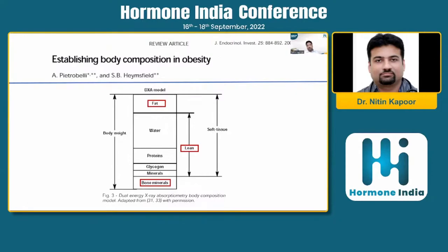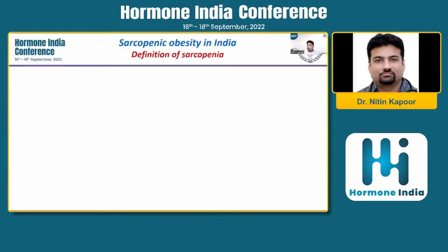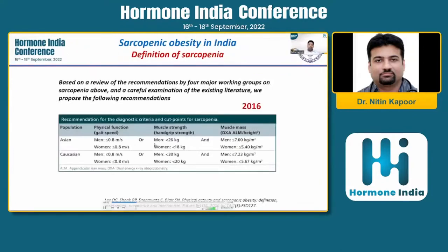Sarcopenia consists of three broad aspects. We talk about physical function, which can be easily measured with gait speed. We talk about muscle strength, measured with a hand grip dynamometer. And we talk about muscle mass, which can be measured with a body composition analyzer. If at least two out of three are present — and there are several different consensus definitions — ultimately all of them look at these three parameters, and at least two should be present to define sarcopenia.